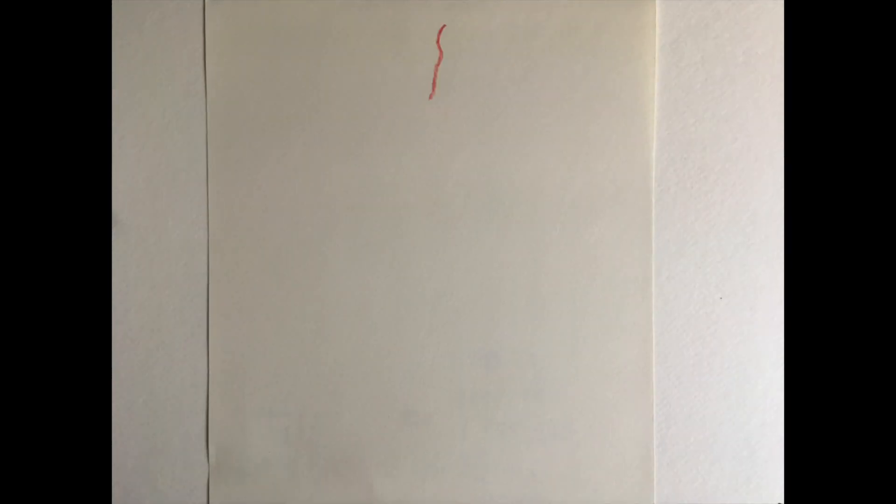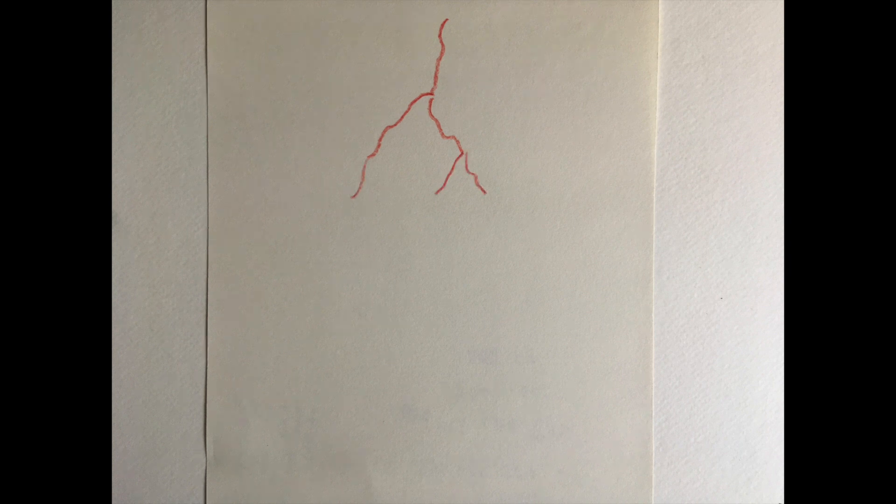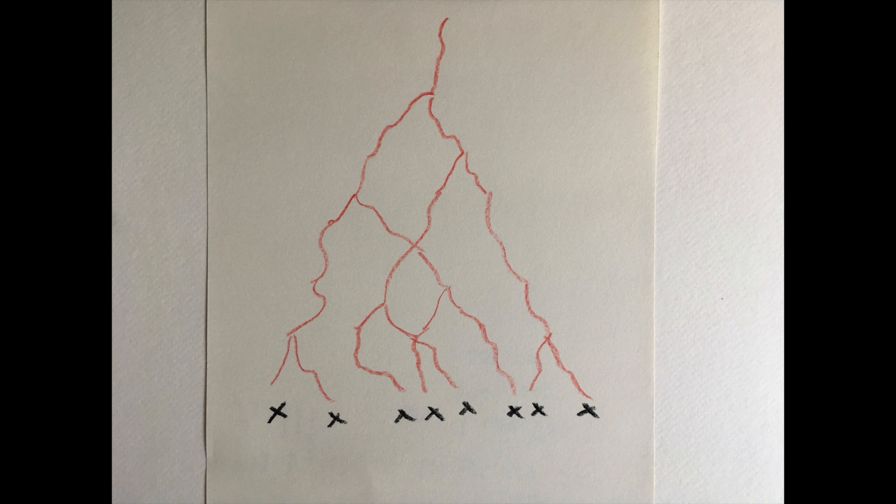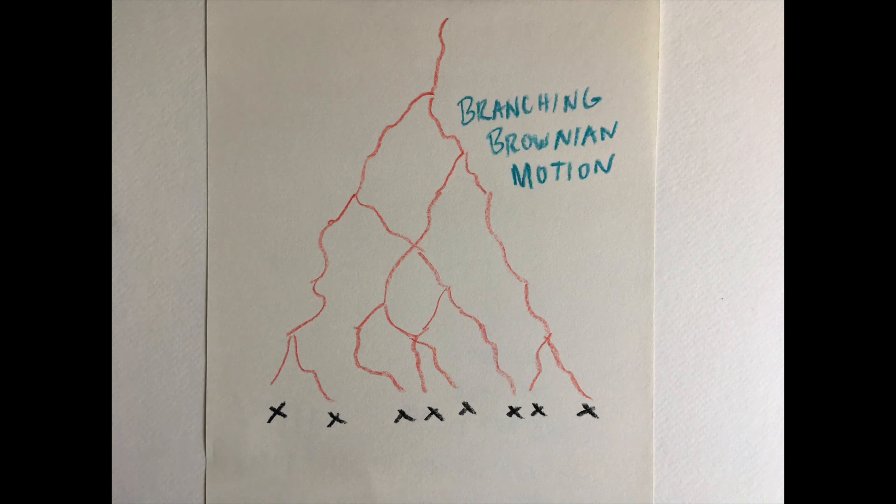A simple model that recreates this pattern is one where lineages move randomly in space while bifurcating until we arrive at the present-day sample. This is called branching Brownian motion.